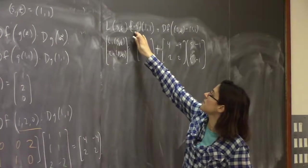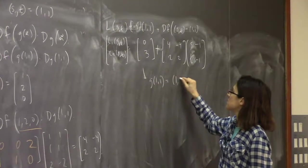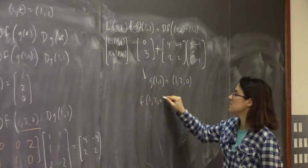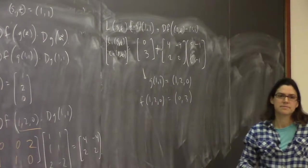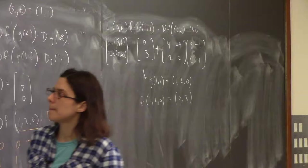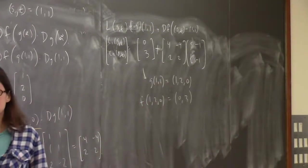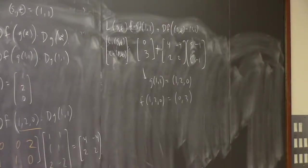We got (0,3) because g(1,1) = (1,2,0) and then f(1,2,0) = (0,3), since xyz = 1·2·0 = 0 and x+y = 1+2 = 3. And (0,3) is a column vector. Points versus columns — as long as you're consistent. I like to switch back and forth depending on whether I'm thinking of it as a vector or a point — though I realize this can be confusing.